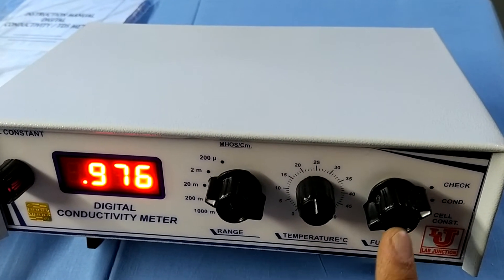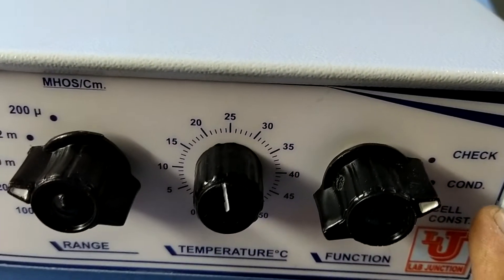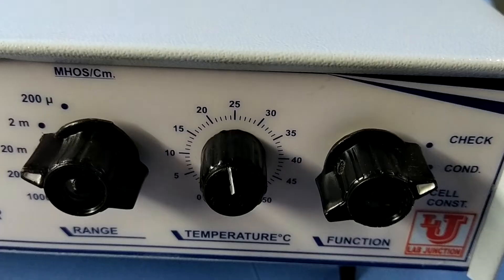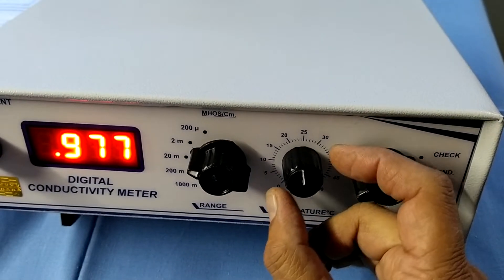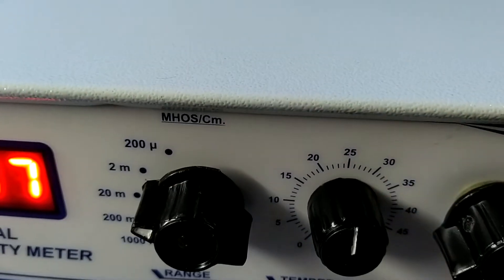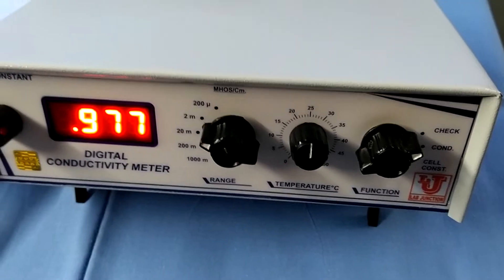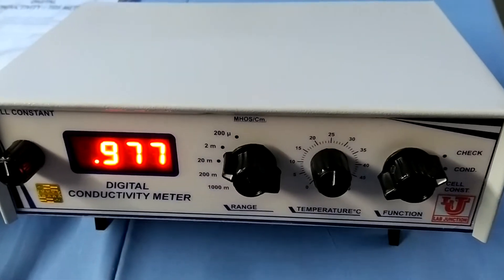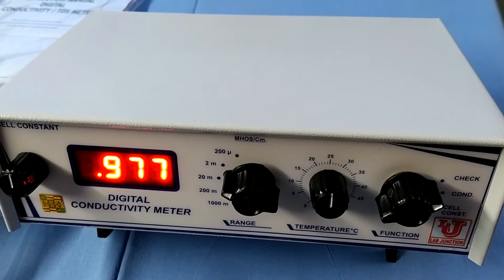In the function control, three positions are there. Check, conductivity, cell constant. Now, first of all, you have to set temperature 25 degree. If you are on temperature, then you can set to your own temperature as you have desired your conductivity on that temperature.